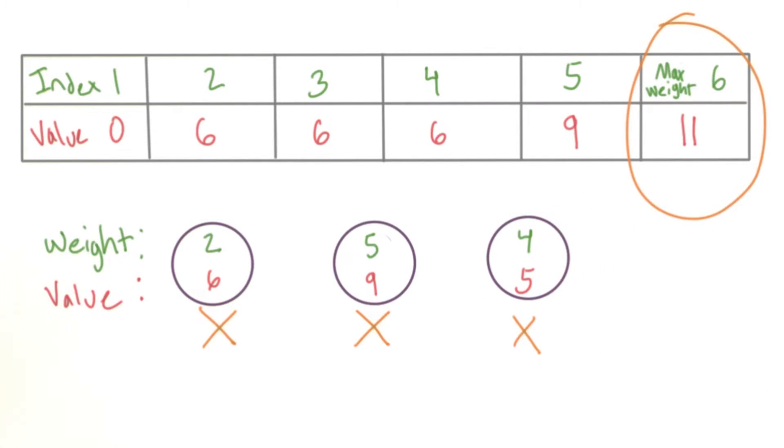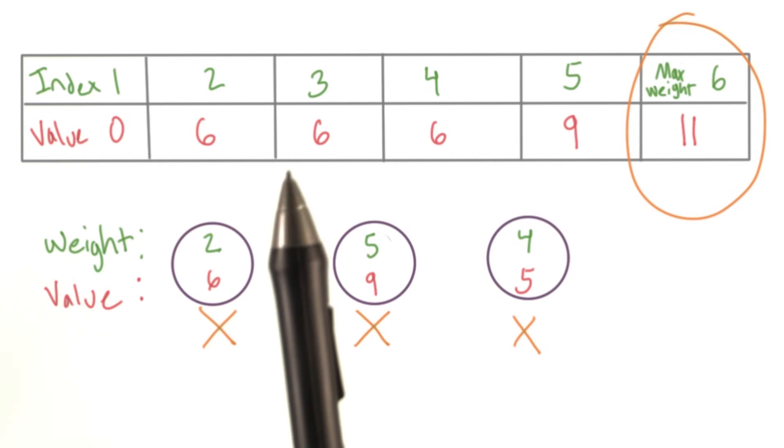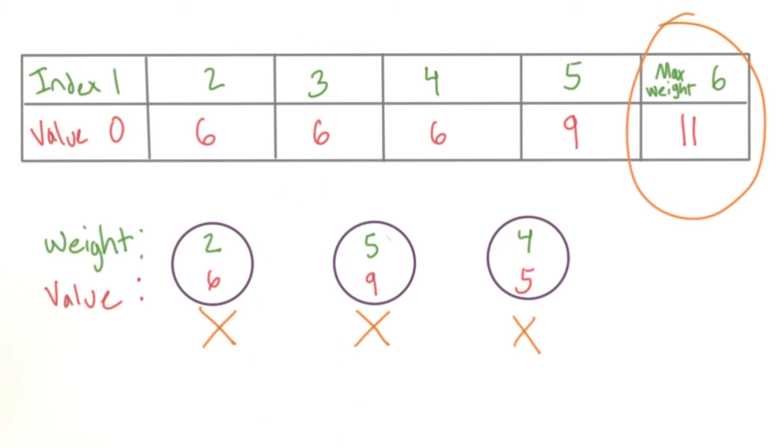This may seem unnecessary with an example this small, but imagine how much time we'll save with lots of objects. Here, we're taking advantage of the table to store pre-computed maximum values. So we only need to do the work once to get those numbers.